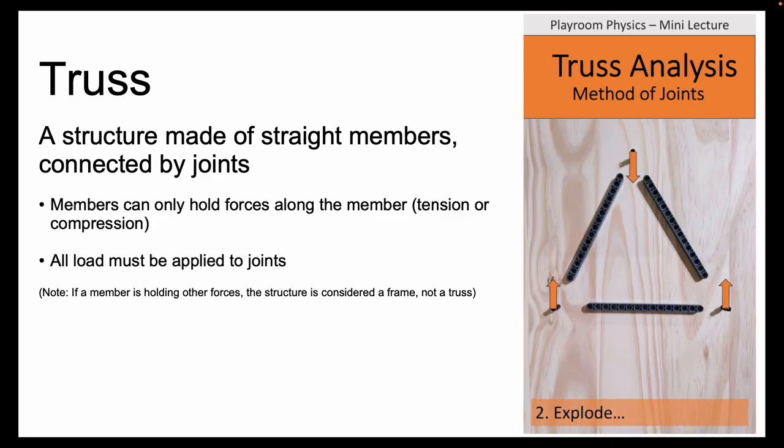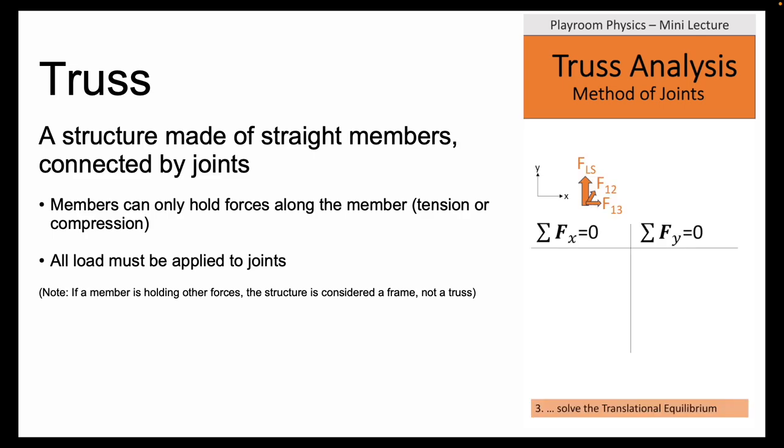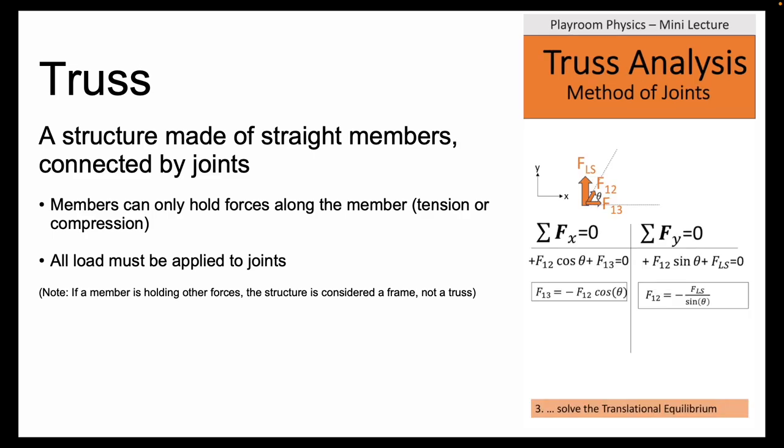Then we explode the parts of the trusses and draw a free body diagram for each of them. Finally we look at each joint, solve the translation equilibrium and by doing so find the forces acting on each of the members in the truss.